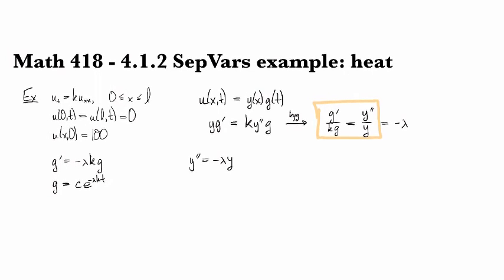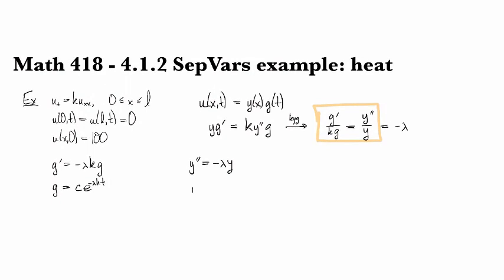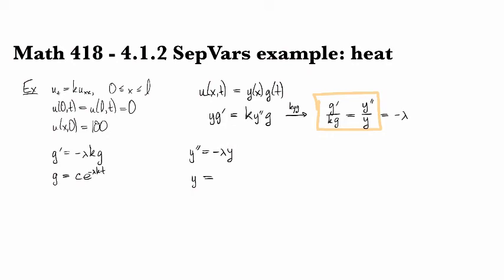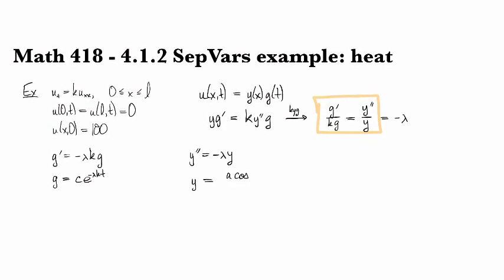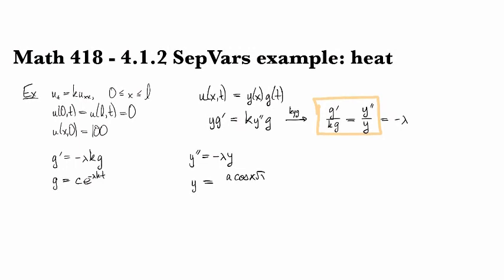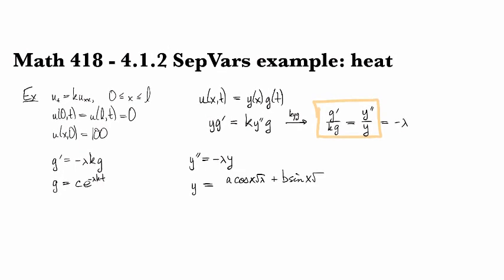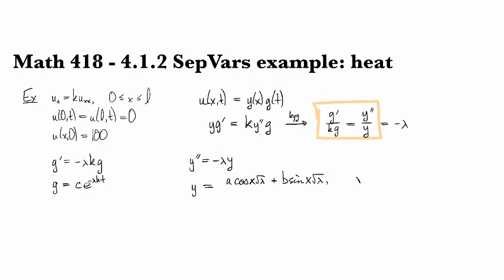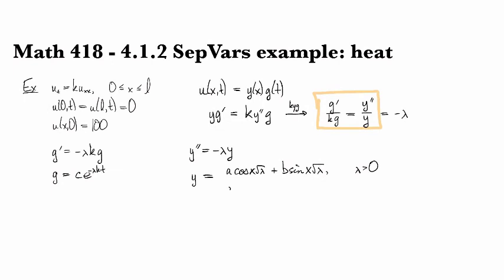Meanwhile, if we look at y, the solution for this one depends on the sign of lambda. So y could be equal to a cosine x root lambda plus b sine x root lambda in the case when lambda is positive.